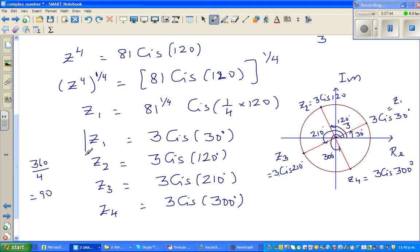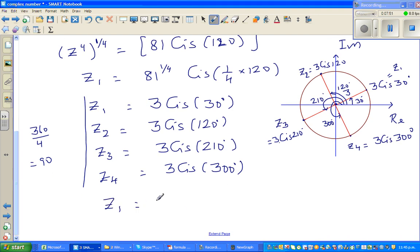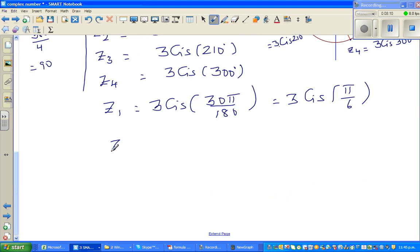So you've got 4 roots. If you want to change this into radians it's pretty easy. Z1 is 3 cis 30 pi over 180 which is 3 cis pi by 6. Z2 is 3 cis, z2 was 120 degrees, so it's 120 pi over 180 which is 3 cis 2 pi by 3.